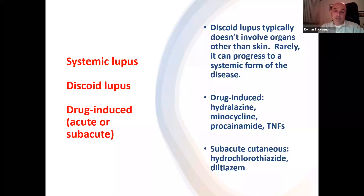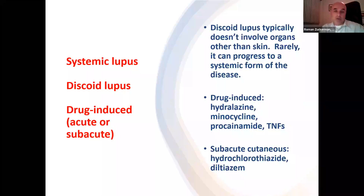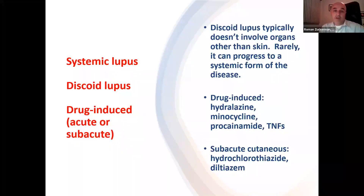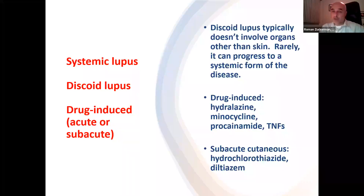Some of the most commonly implicated medications for drug-induced lupus include the blood pressure medication hydralazine, the antibiotic minocycline, the cardiac medication procainamide, and TNF-alpha inhibitors — medications we use for rheumatoid arthritis. These medications can induce drug-induced lupus. There's also a subacute form triggered by different medications. Every year we're finding more medications that can set off this reaction.